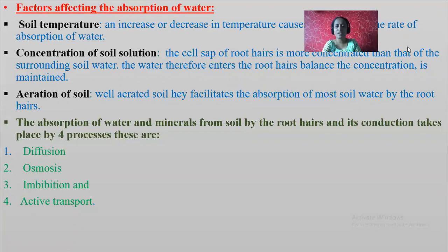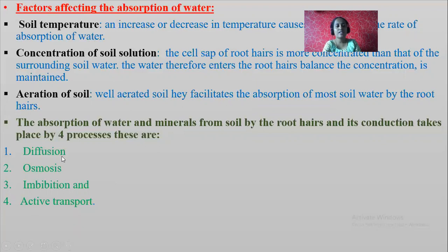The absorption of water and minerals from the soil by root hair and its conduction takes place by four processes. After absorption, how do the water molecules reach the xylem and other parts of the plant body? It is through four processes: diffusion, osmosis, imbibition, and active transport.